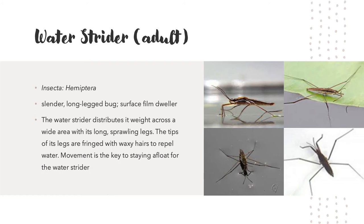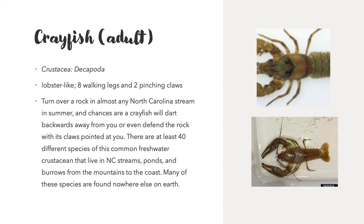Water striders have long, slender legs and are surface film dwellers. The water strider distributes its weight across a wide area with its long, sprawling legs, and the tip of its legs are fringed with waxy hairs to repel the water. Movement is key for the water strider to stay afloat. Crayfish are lobster-like with eight walking legs and two pinching claws. There are at least 40 different species of this common freshwater crustacean that live in North Carolina streams, ponds, and burrows from the mountains to the coast, and many of these species are found nowhere else on Earth.